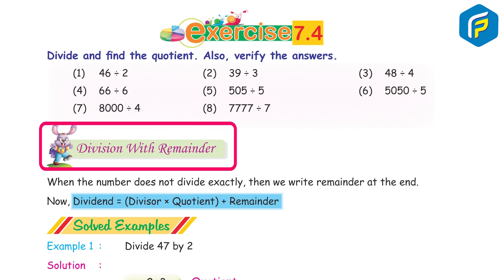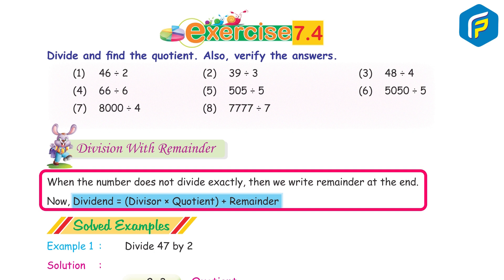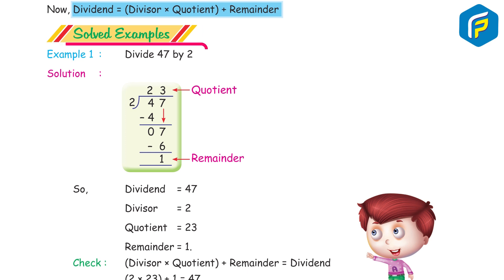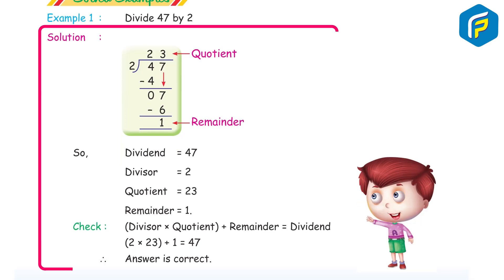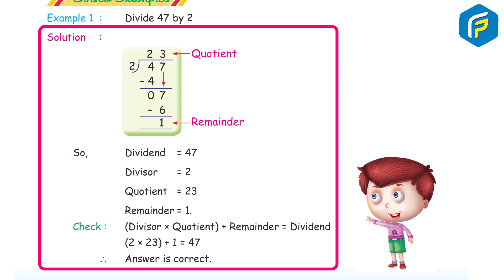Division with remainder: when a number does not divide exactly, we write the remainder at the end. Now, dividend = (divisor × quotient) + remainder. Solved example. Example 1: Divide 47 by 2. Solution: quotient 23, remainder 1. So, divisor 2, quotient 23, remainder 1. Check: 2 × 23 + 1 = 47. Answer is correct.